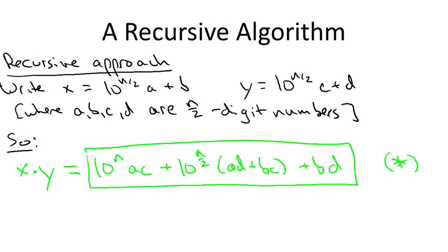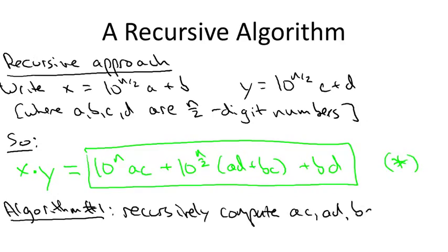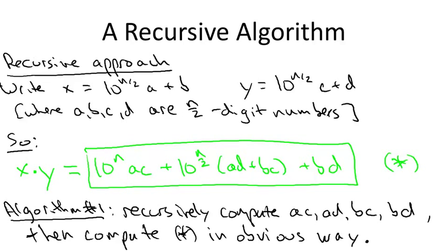We began with the sort of obvious recursive algorithm where we just evaluate the expression star in the straightforward way. That is, star contains four products involving n over two-digit numbers: AC, AD, BC, and BD. So we make four recursive calls to compute them, and then we complete the evaluation in the natural way. Namely, we append zeros as necessary and add up these three terms to get the final result.